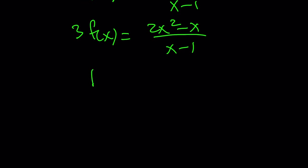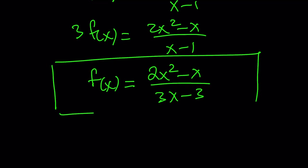And then finally, multiplying both sides by 1 third or dividing by 3, we get 2x squared minus x divided by 3x minus 3. And that would be the expression for f.